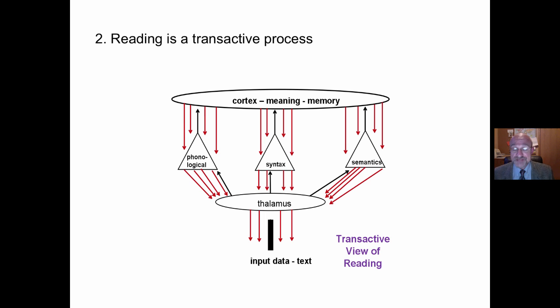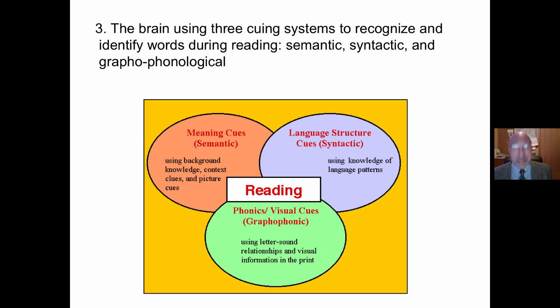Brain imaging research shows that there's almost ten times more information flowing from the cortex down than from the page up. So we are constantly predicting, using what's in our head to make sense of what is out there.